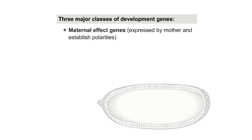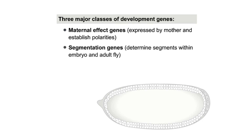Genes involved in the regulation and direction of development are revealed by mutations that affect development. There are three major classes of these genes: maternal effect genes, which are expressed by the mother during oogenesis and establish the anterior-posterior and dorsal-ventral polarities of the embryo.